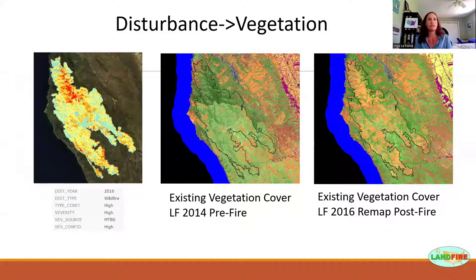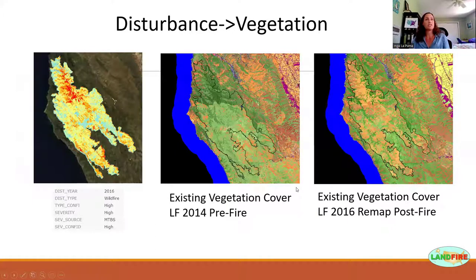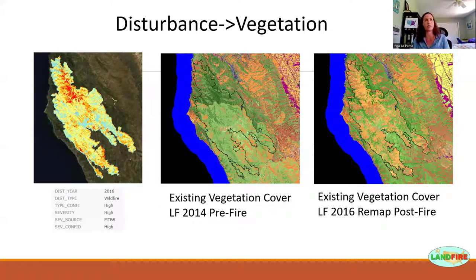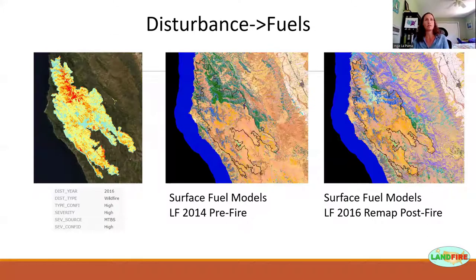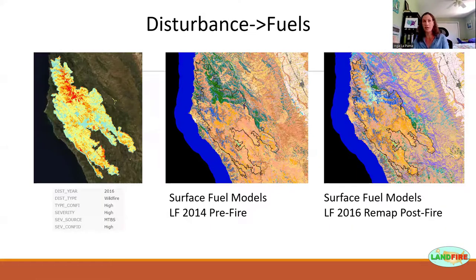If you have a disturbance such as the Soberanus fire in 2016, you will see a change from pre-fire to post-fire vegetation cover. In areas where it was more severe, you'll see more change. We directly use our disturbance layers to affect change in vegetation, and we do the same for fuels. In the area of highest severity, you'll see the most change for fuels. These fuel models are used quite often in fire behavior modeling and are really important when you're on a fire or doing risk analyses.